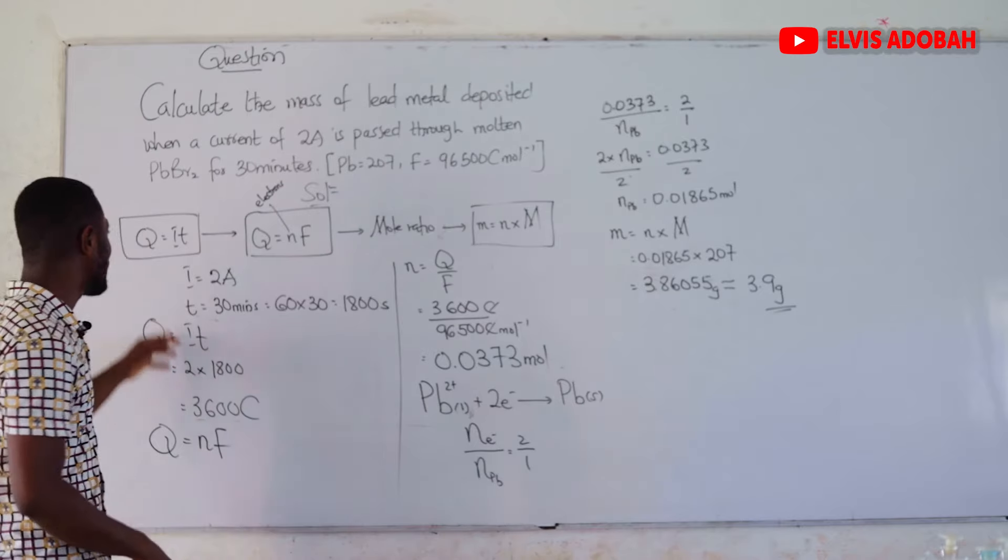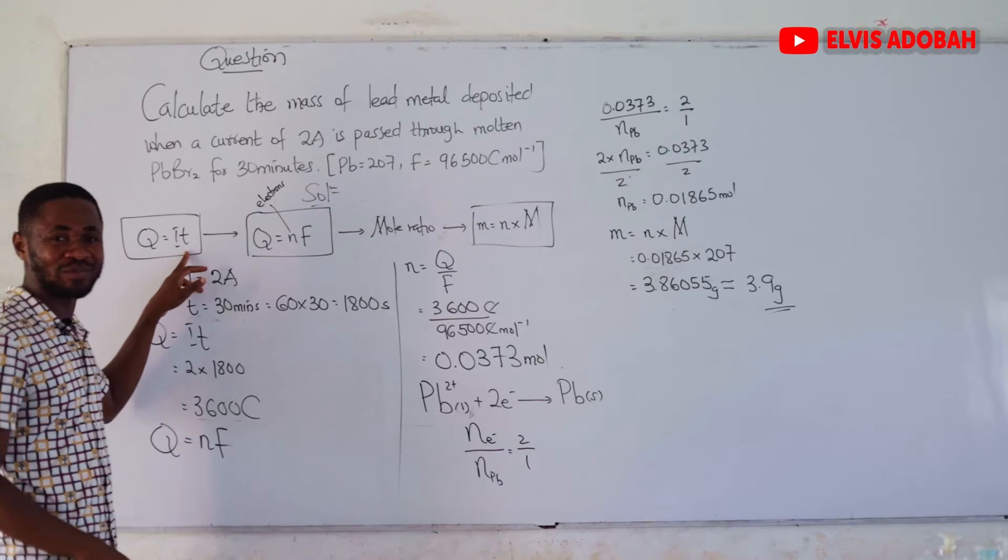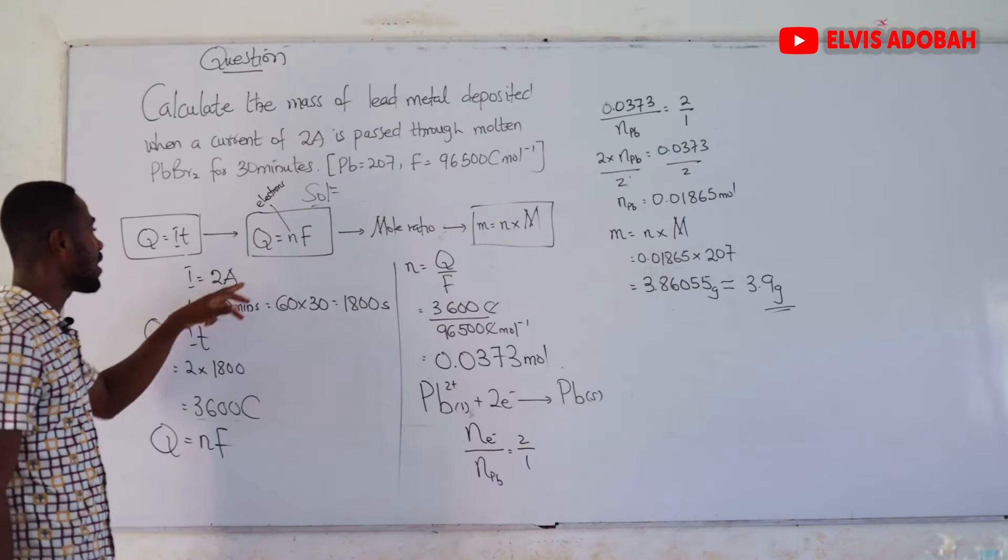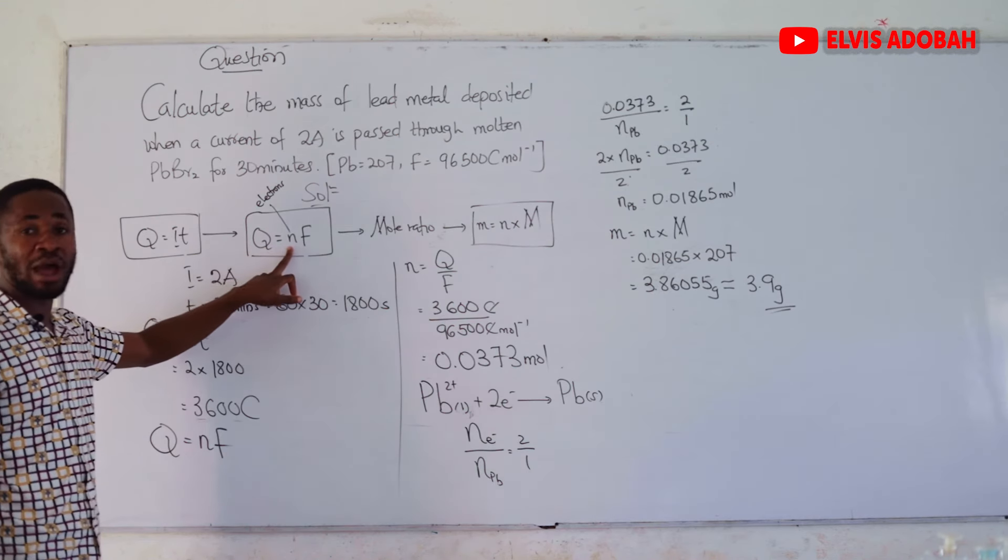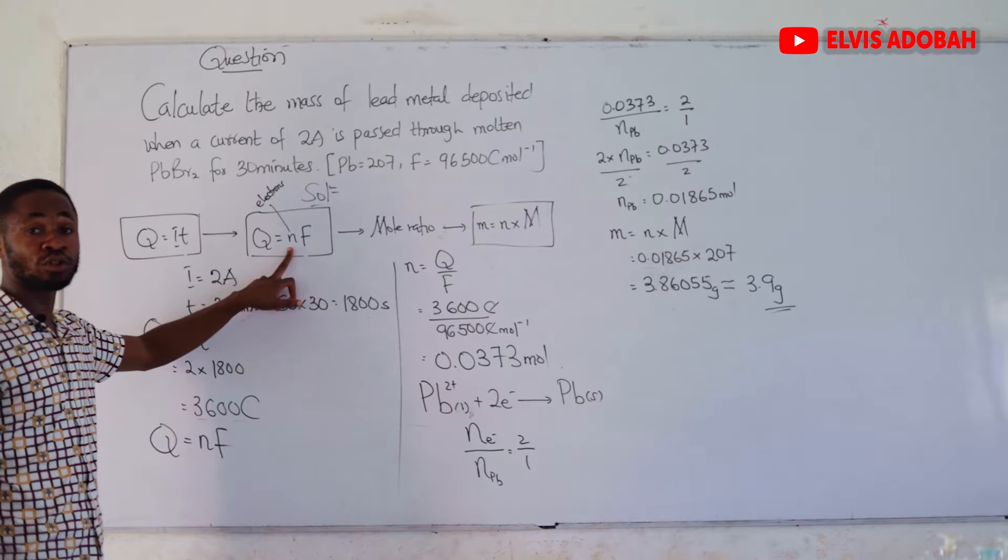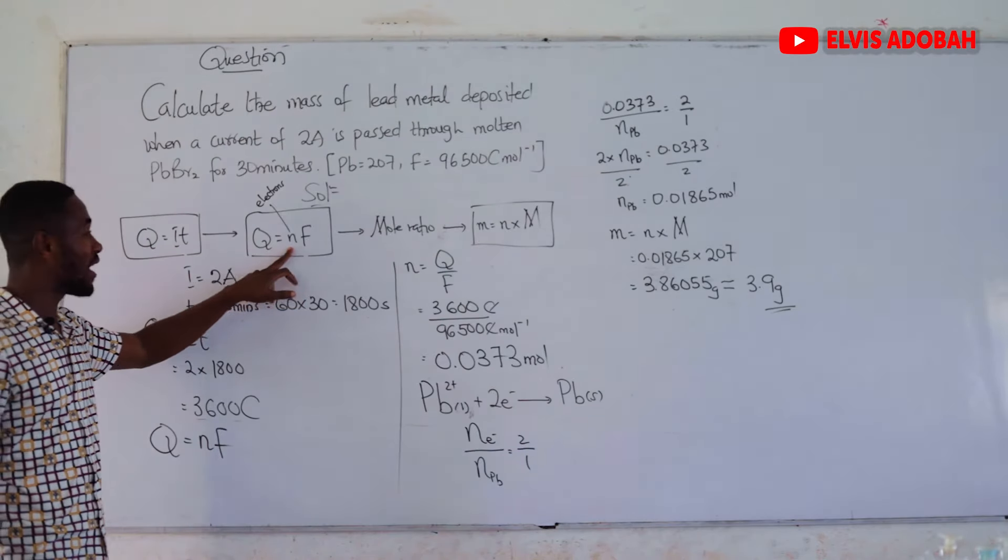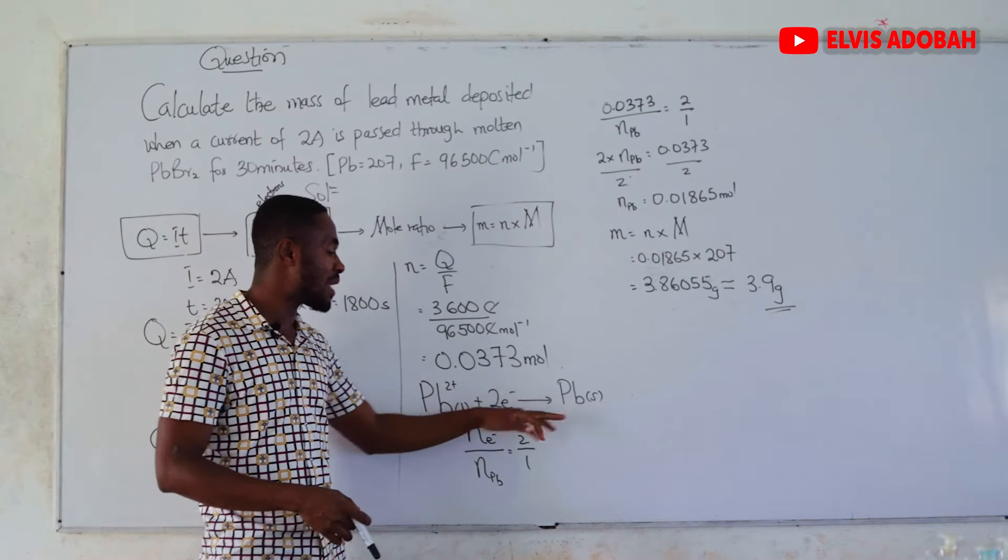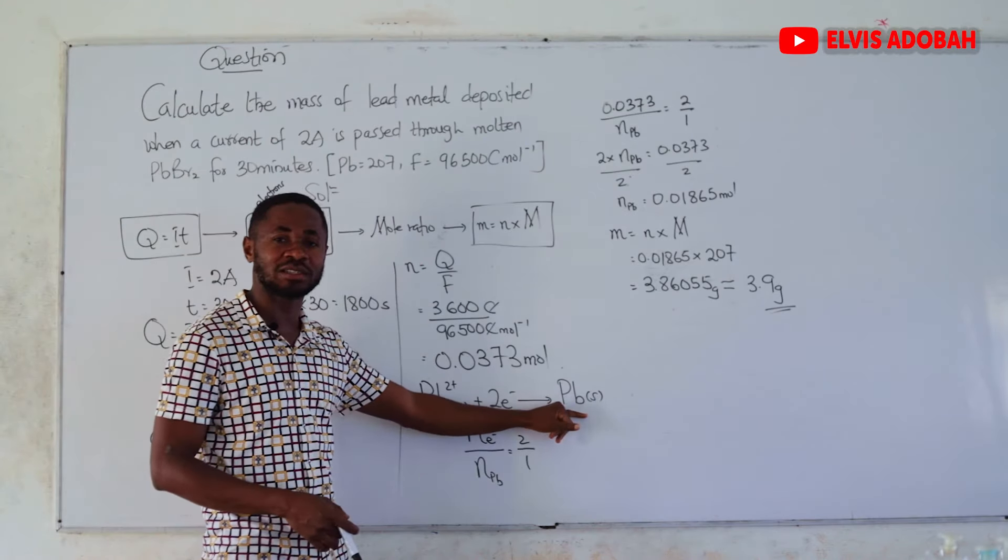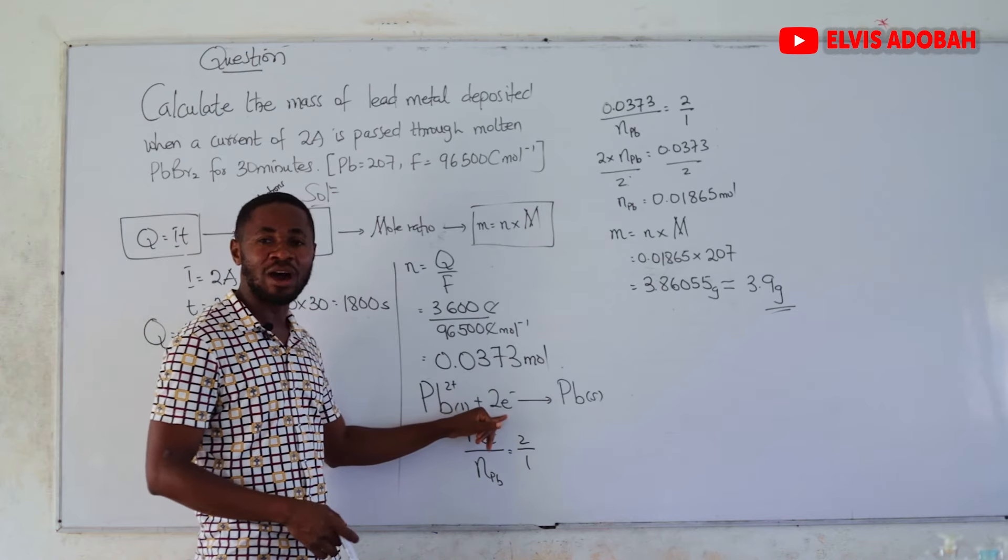So, whenever you are given these kind of questions that require you to apply the first and the second law of electrolysis proposed by Faraday, remember, Q is equal to IT. Then, Q is equal to NF, where the N represents the number of moles of electrons.